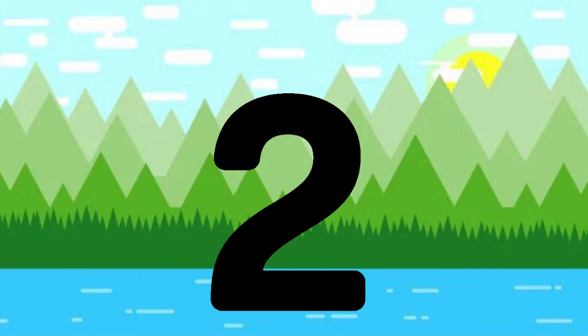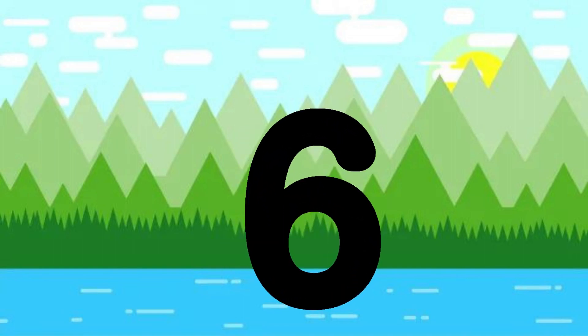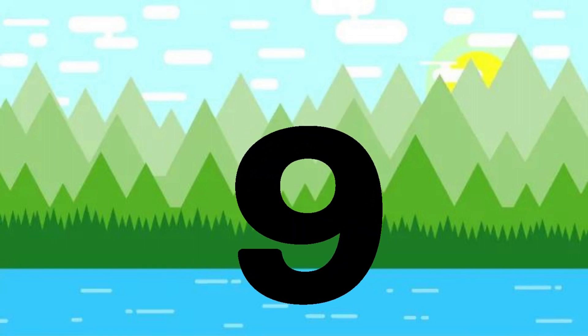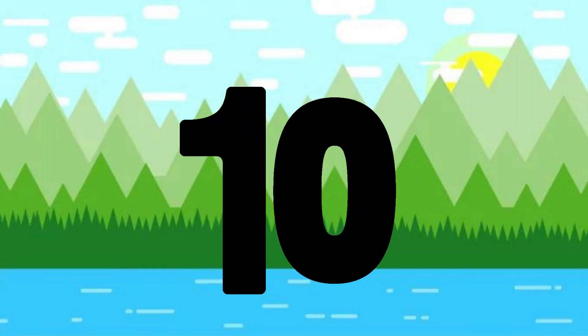One little, two little, three little numbers. Four little, five little, six little numbers. Seven little, eight little, nine little numbers. Ten little numbers.